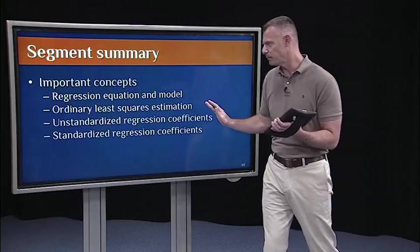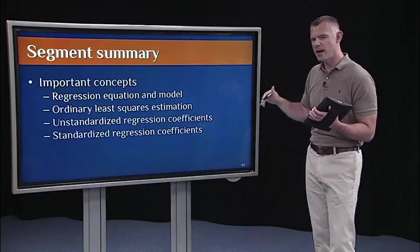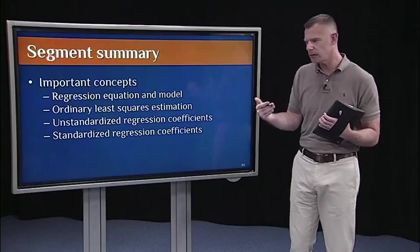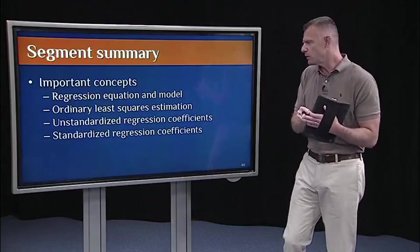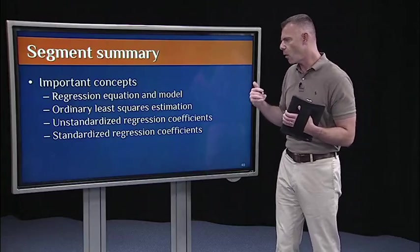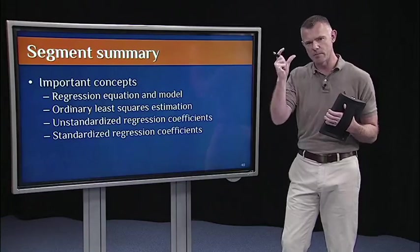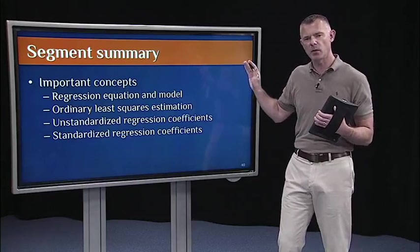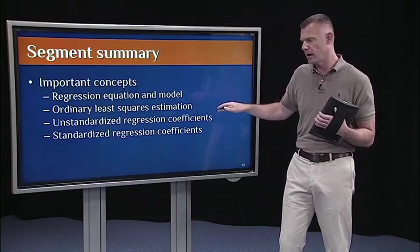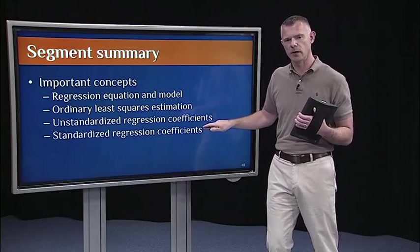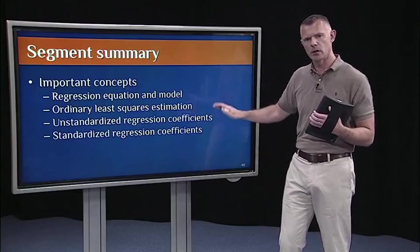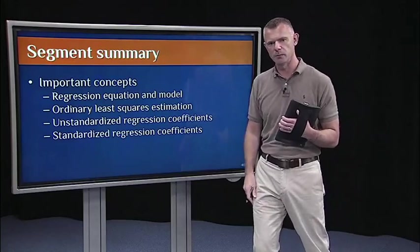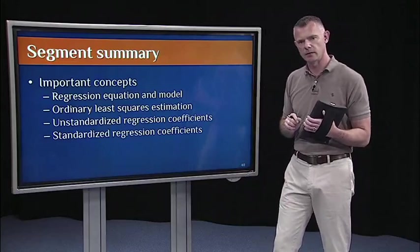So to wrap up this segment, the important concepts to take away, again, are to understand the regression equation and the model. Perhaps the most important concept in this segment is the idea of ordinary least squares estimation, the idea that we're going to minimize the residuals in our regression model. And then understand that we can calculate both unstandardized regression coefficients and standardized regression coefficients. And I'll show you how to do each of those in lab this week, using the LM function and one extra function to do the standardized. And that's it for calculating the coefficients.